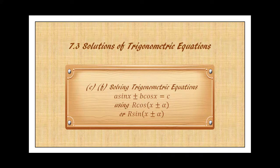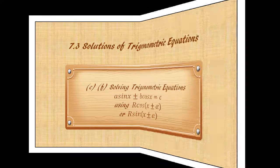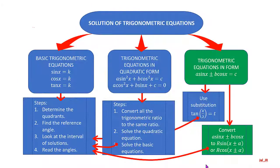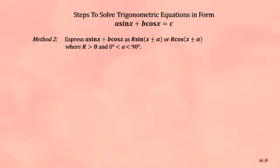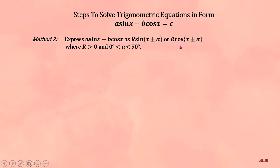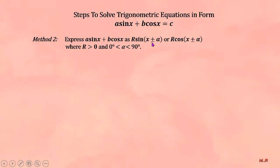In this video we are going to solve the trigonometric equation in the form a·sine(x) ± b·cosine(x) = c, by converting a·sine(x) ± b·cosine(x) to r·cosine(x ± α) or r·sine(x ± α).